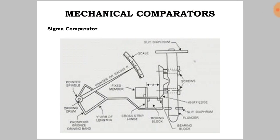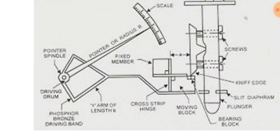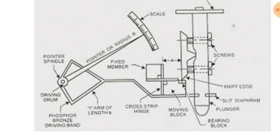This is the diagram showing the sigma comparator. It consists of a pointer, pointer spindle, driving drum, phosphor bronze driving band, Y arm, cross strip hinge, moving block, screws, scale, and bearing block.